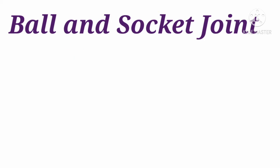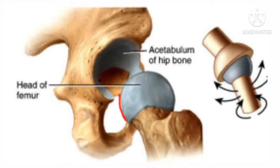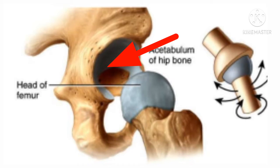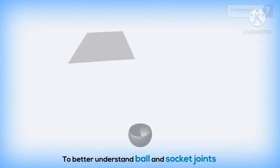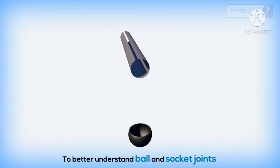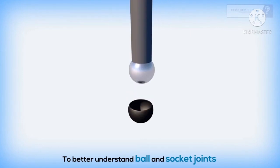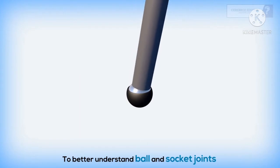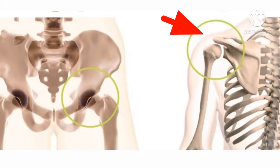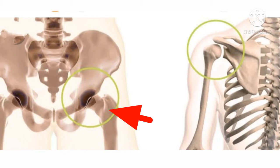Let us study about ball and socket joint. In a ball and socket joint, the rounded end of one bone fits into the cavity or hollow space of another bone, and this cavity allows the round-ended bone to move in all directions. To better understand the ball and socket joint, roll the paper into a cylinder and fix it to a ball, put the ball-ended cylinder into a bowl and move it — it can freely move in the bowl. This type of joint which allows movement in all directions is known as ball and socket joint. Shoulder joint and hip joint are the examples of ball and socket joint.